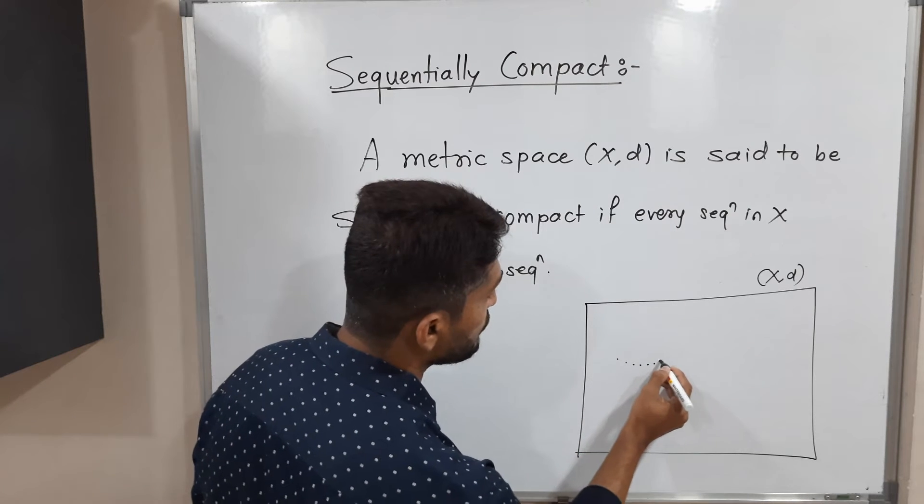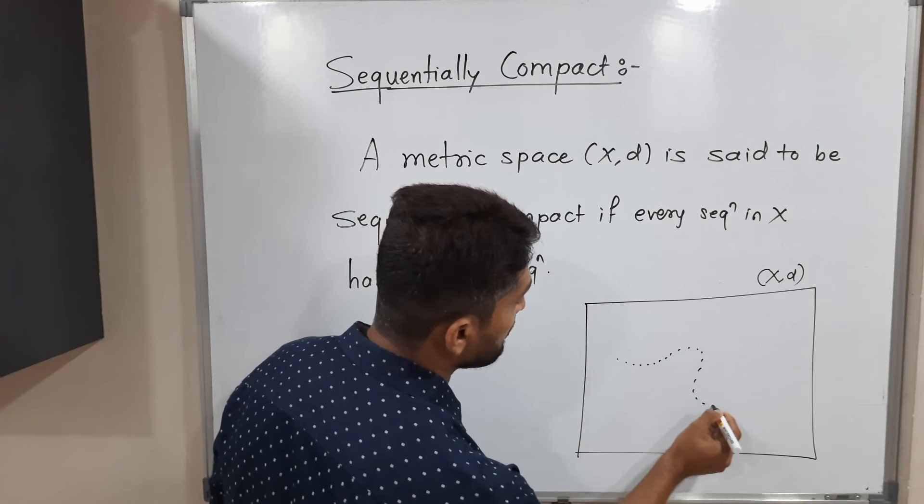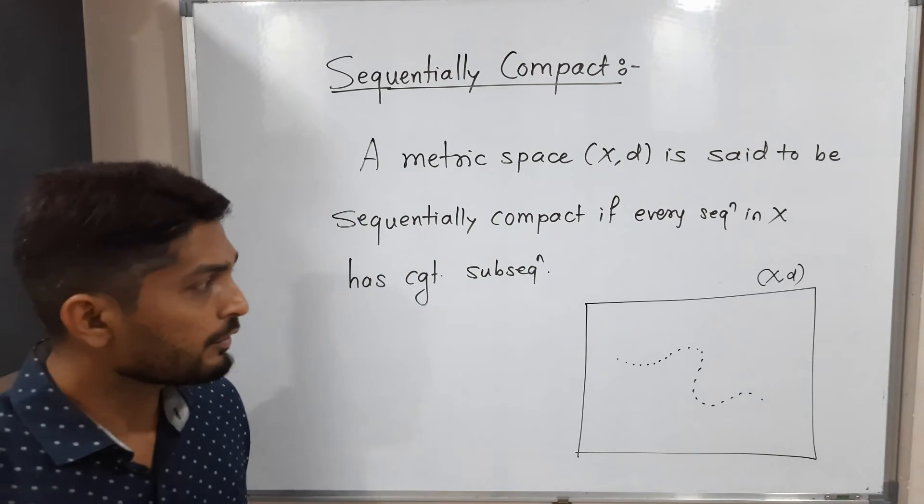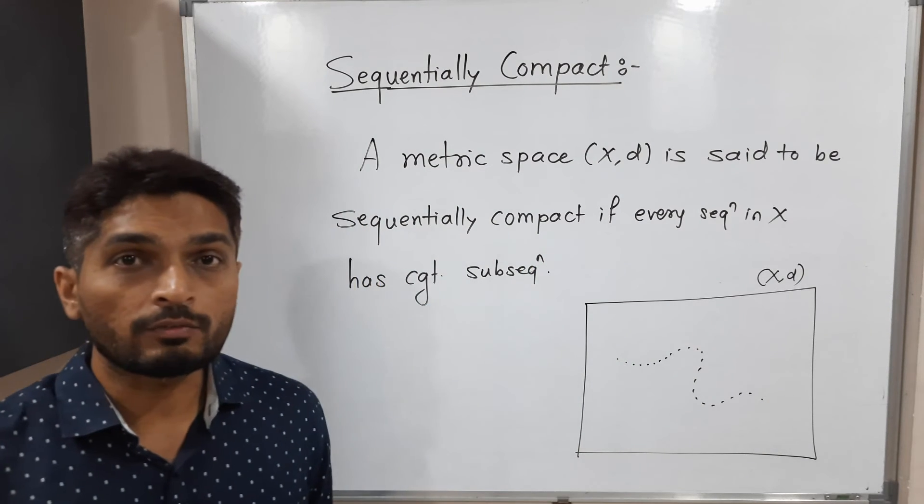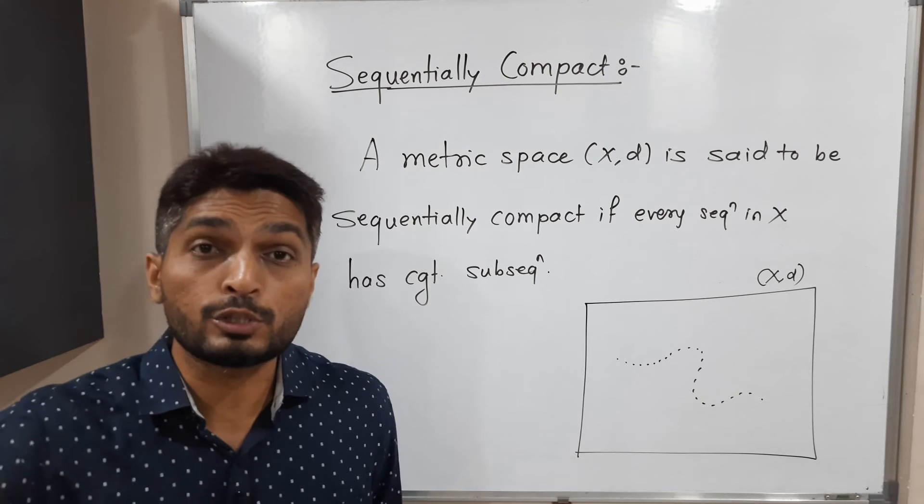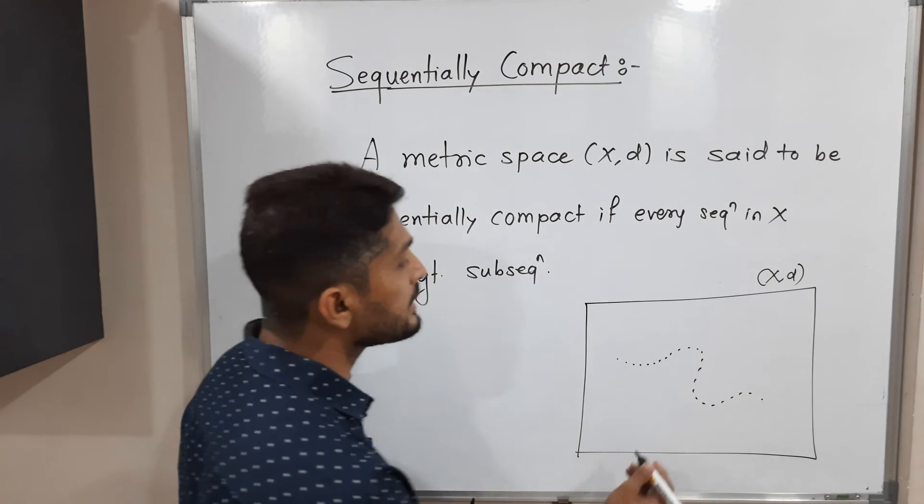If you take any sequence of points of x, if you take any sequence, many infinite points are there. And if you have such sequence, if you have any type of sequence, it should have some convergent subsequence.